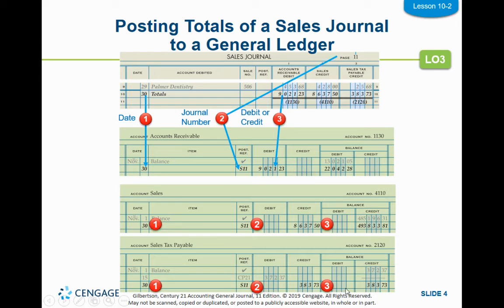We'll talk about this more later, but basically you hold on to that sales tax until you pay it into the government, and typically that's done once a month or once a quarter. That's why this example shows a debit and a zero balance — because they already paid that into the government.